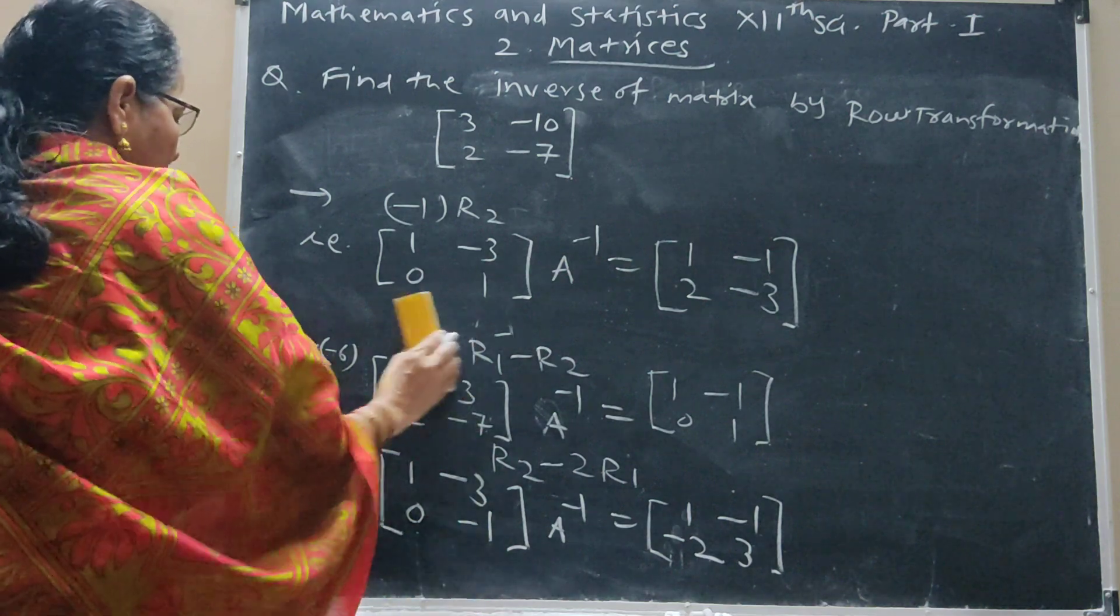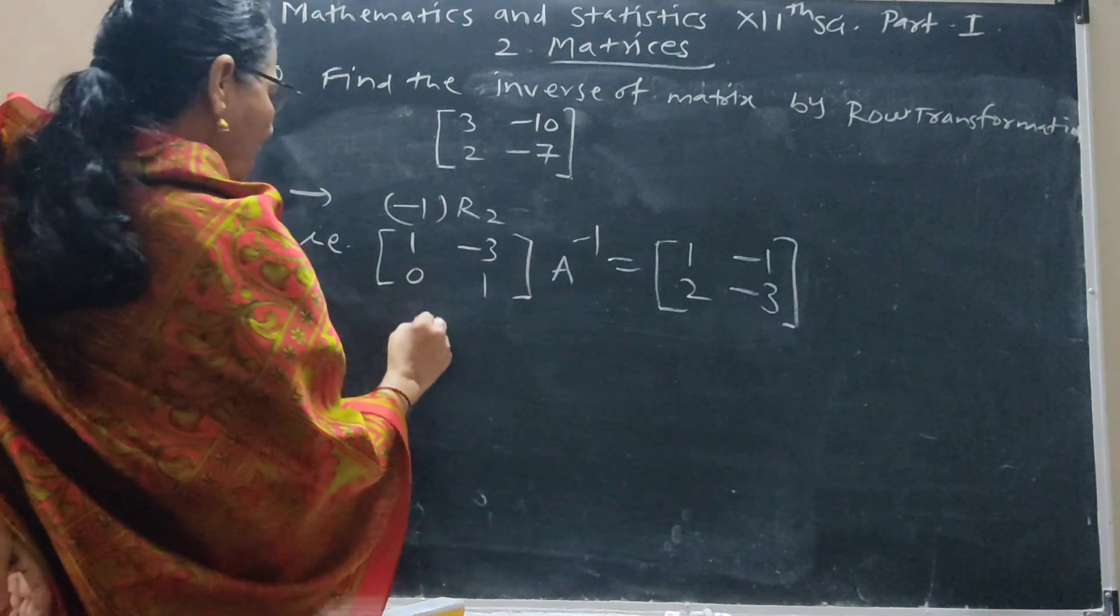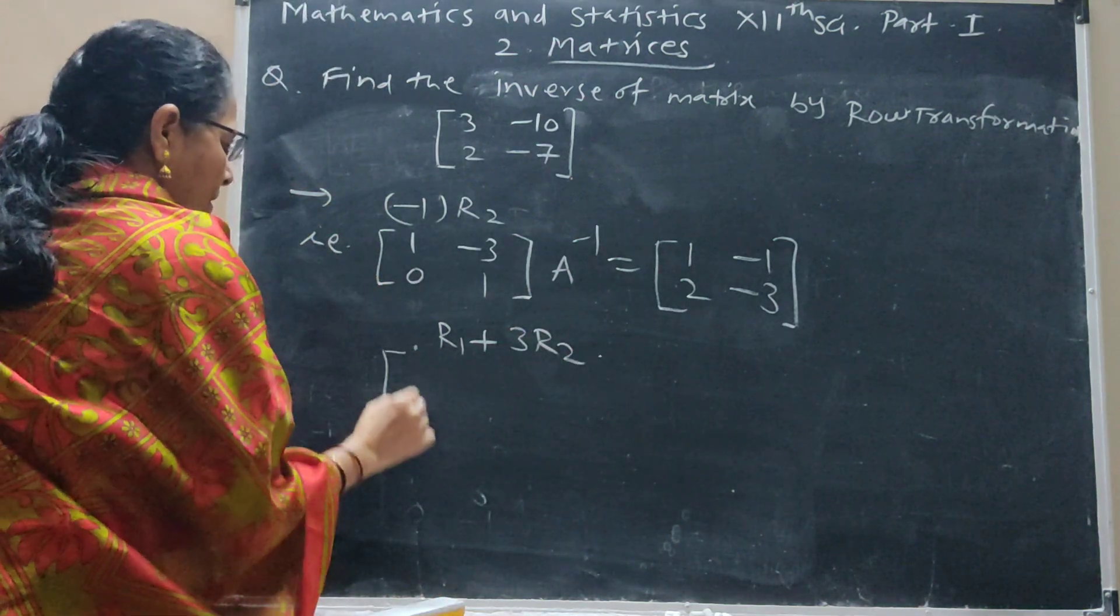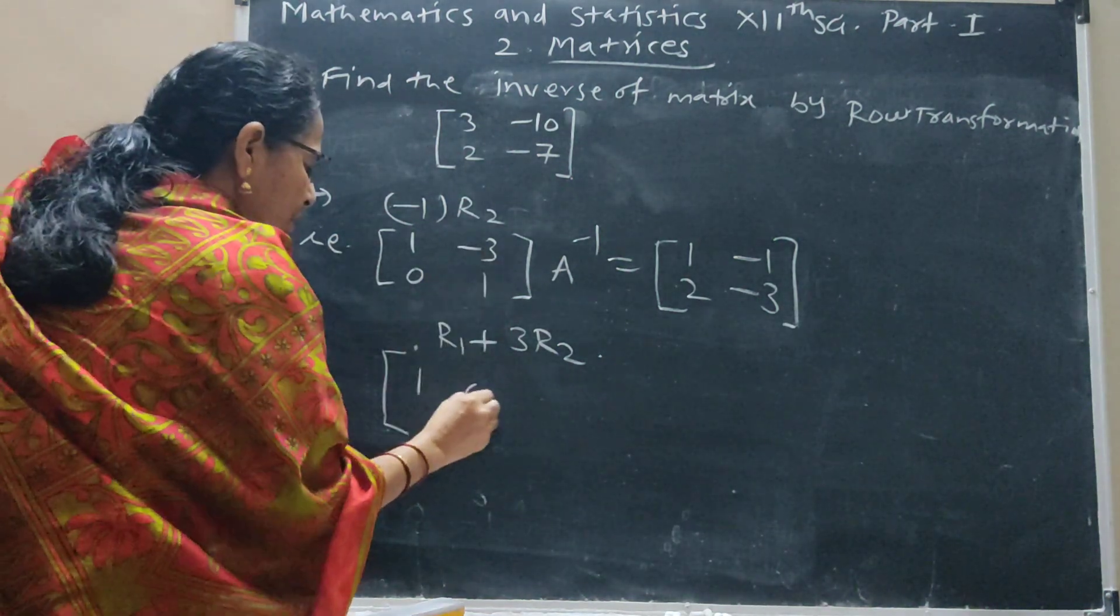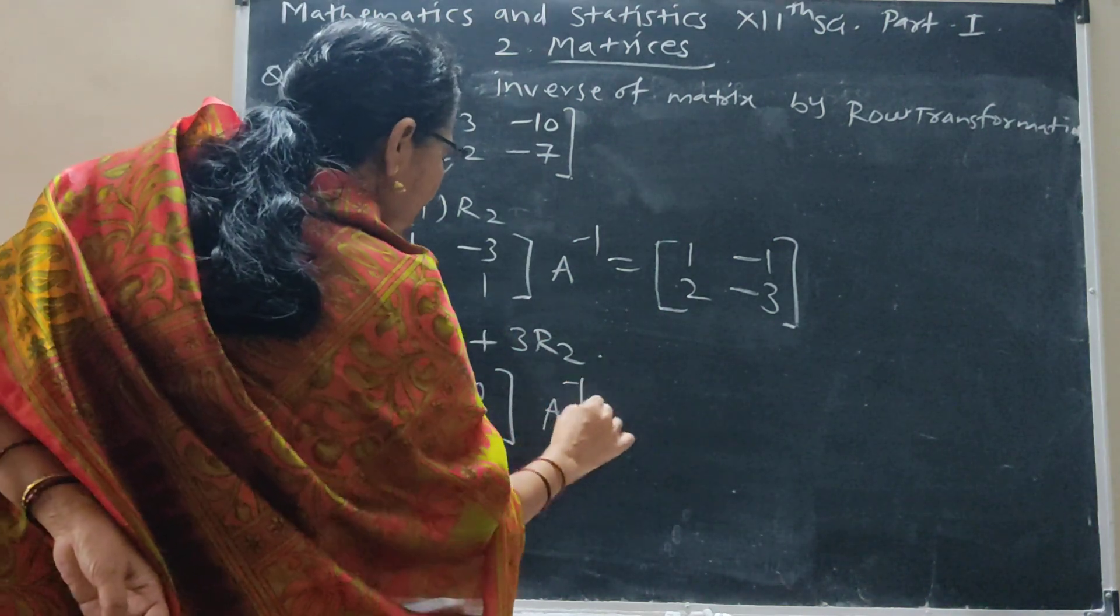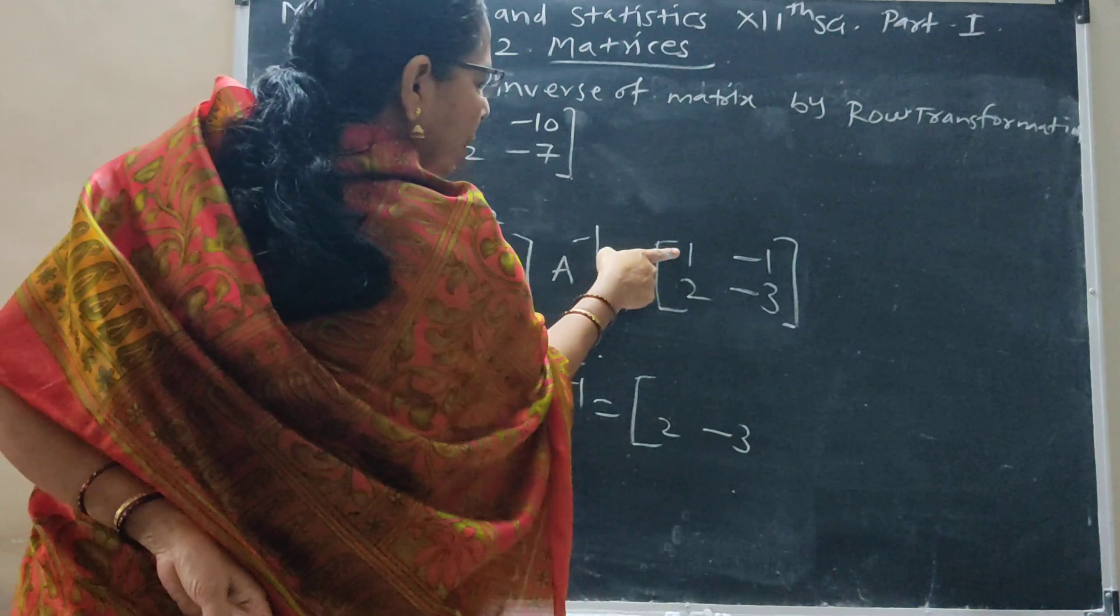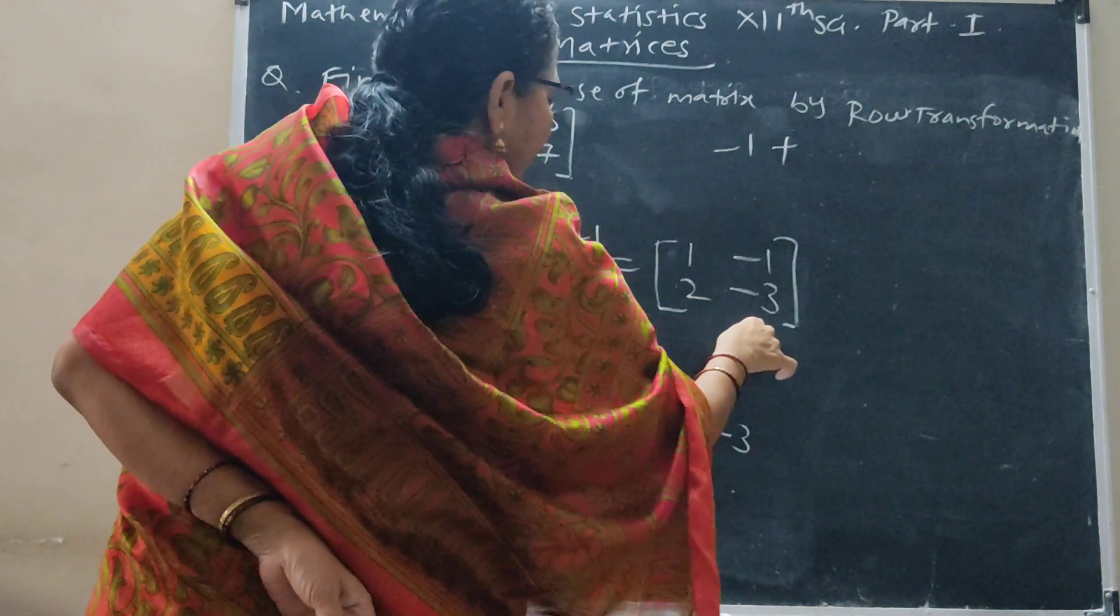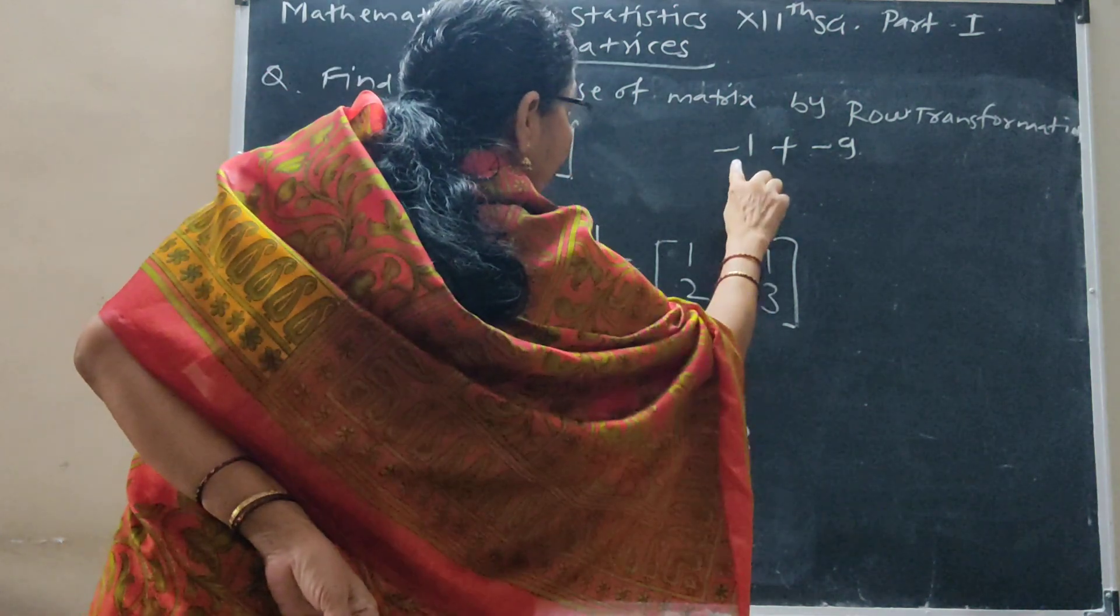Next, we have to take R1 plus 3R2. Thrice of this is 0, so 1 as it is. Thrice of this is 3, minus 3 plus 3 is 0. Second row as it is. R1 plus 3R2: 1 plus thrice of this, say 1. Minus 1 plus thrice of this is minus 9, which is plus 10. Minus 10, minus 10 is there.